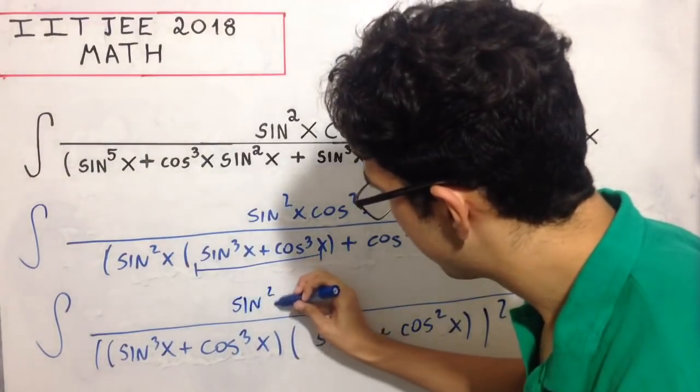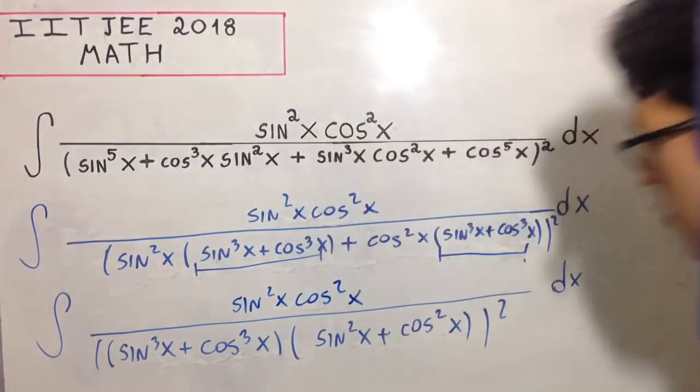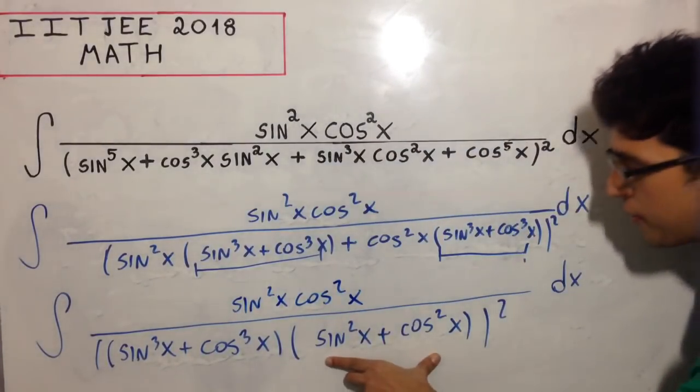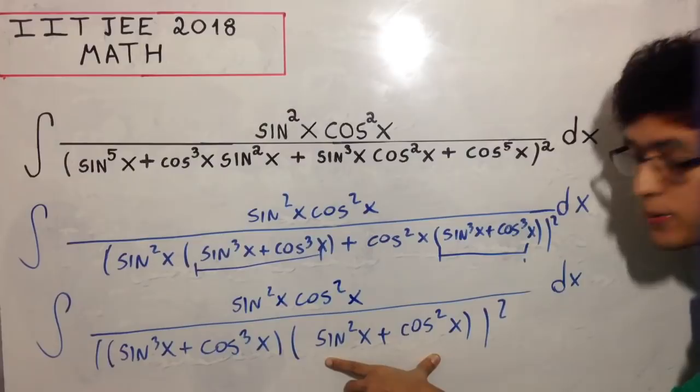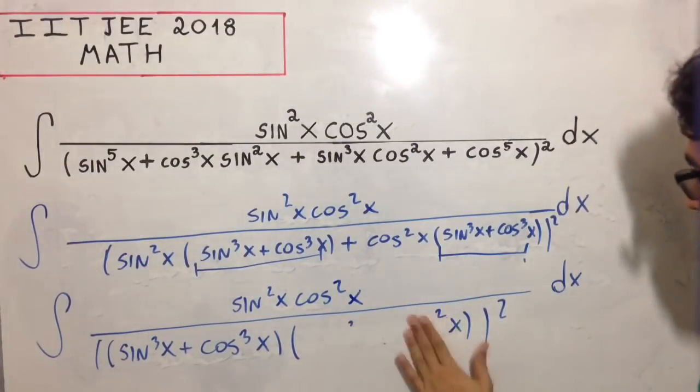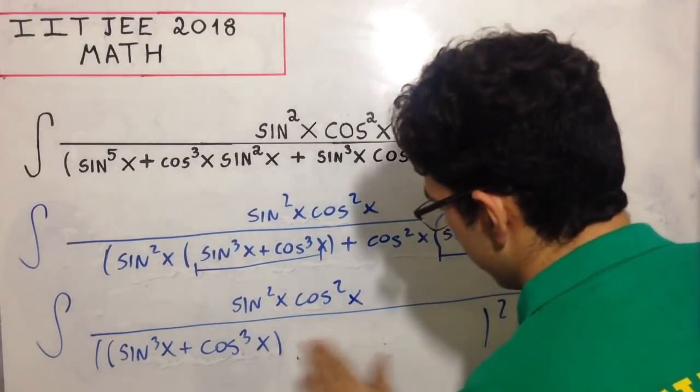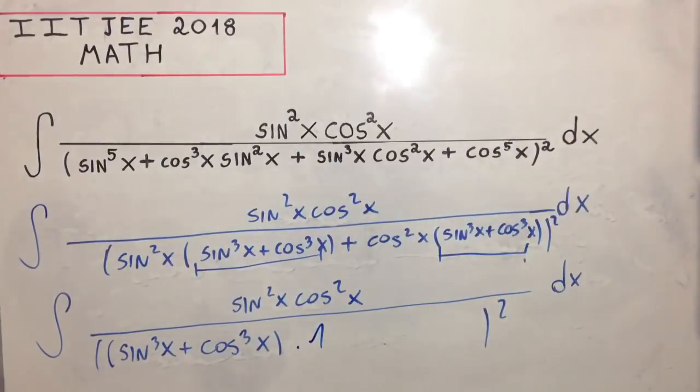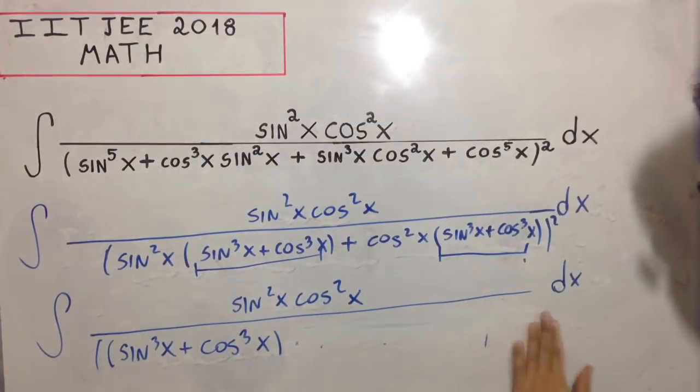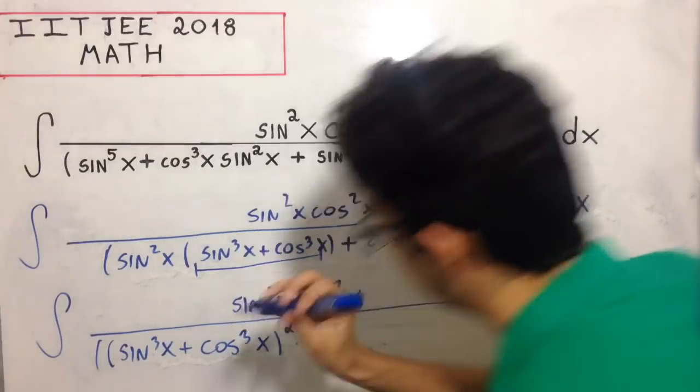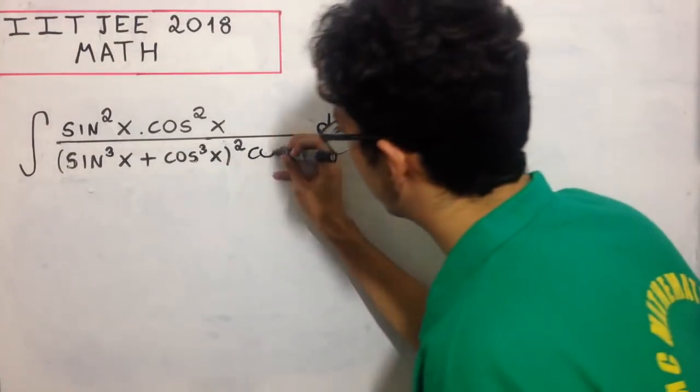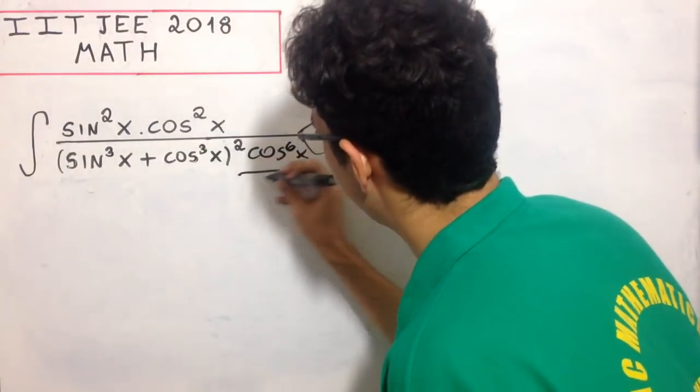This is a trigonometric identity, right? Sin²x + cos²x equals one, so I'm going to change it to one. Times one times one, same thing.